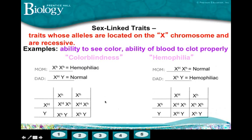Looking back at the first Punnett square — where do those boys get their hemophilia from? Do they get it from their dad or from their mom? In this case, they get it from mom, because she has the recessive allele on her X chromosome. The male inherits the Y from his dad, so that X came from mom. In the second example, where did the female get her hemophilia from? Both mom and dad. And this boy got it from his mom.